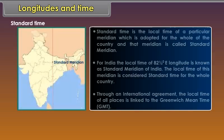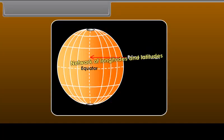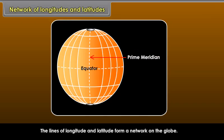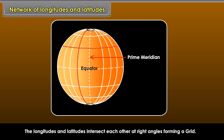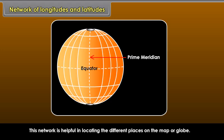Standard time: Standard time is the local time of a particular meridian which is adopted for the whole country, and that meridian is called the standard meridian. For India, the local time of 82 and a half degrees east longitude is known as the standard meridian of India. The local time of this meridian is considered standard time for the whole country. Through an international agreement, the local time of all places is linked to the Greenwich Mean Time (GMT). The lines of longitude and latitude form a network on the globe, and the longitudes and latitudes intersect each other at right angles forming a grid, which is helpful in locating different places on the map or globe.